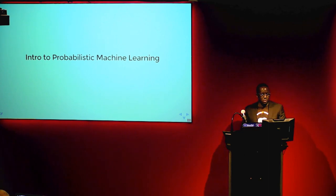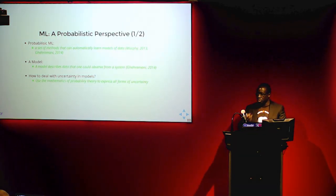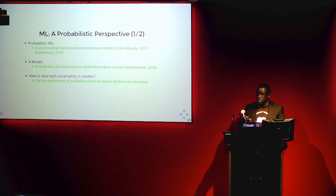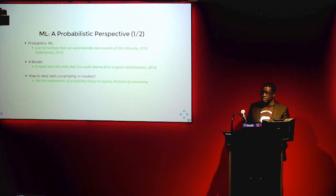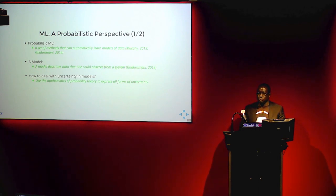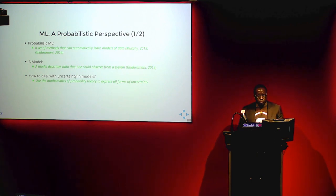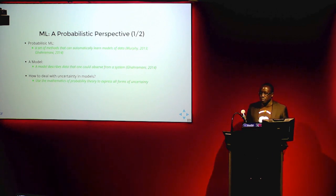Let's learn a little about what probabilistic machine learning is. One could define it as a system that develops models of data automatically. A model is just a description of data you could observe from a system — your model should be able to produce data from the system you're trying to study. If that's the case, your model should be able to make predictions, make comparisons between models, and also know when it doesn't know — that is, quantify uncertainty.